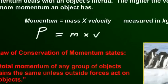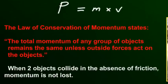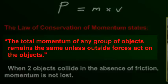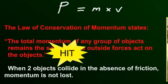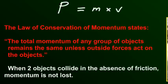Now, there's a law of conservation of momentum, and it states that the total momentum of any group of objects, so in our example that we just said, the car and the truck, the total momentum will remain the same unless outside forces act on the objects. So for example, if you have two objects that are colliding, and you don't have a lot of friction, in the absence of friction, momentum will not be lost.